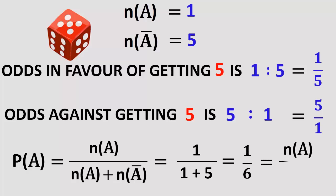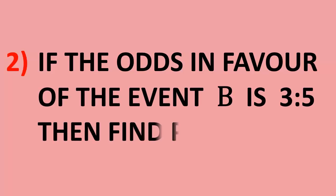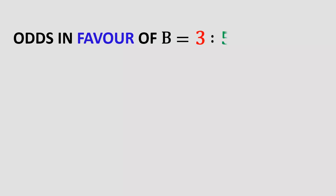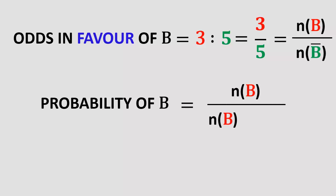If odds in favor of the event B is 3 to 5, then find P(B). It is given that odds in favor of B is 3 is to 5, that is 3 by 5 equals n(B) by n(B-bar). Probability of B is n(B) by n(B) plus n(B-bar), which equals 3 by 3 plus 5, that is 3 by 8.